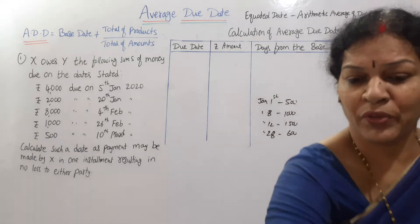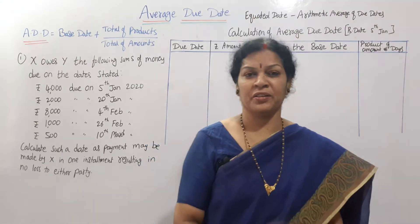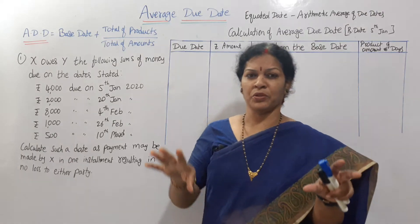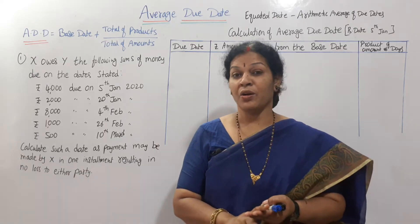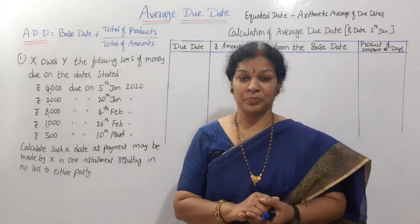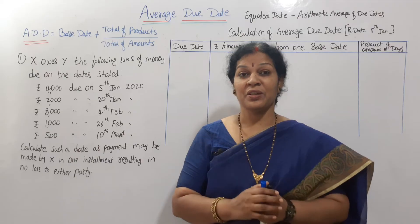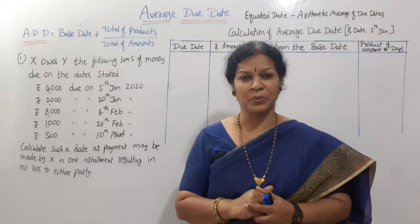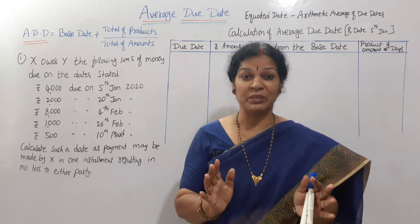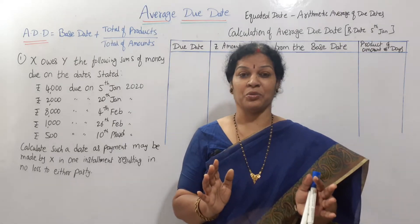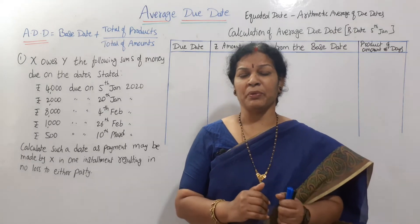Why do we go for Average Due Date? The main thing is to find a date for payment which is fair and just for both parties X and Y. Also, this Average Due Date is useful to calculate interest on drawings and for various other purposes. It is useful for all parties — both the party making the payment and the party receiving the payment. It is just, easy to calculate, and much useful.